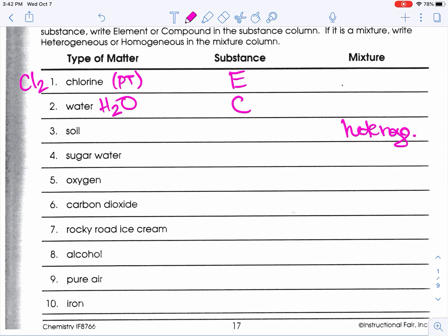Sugar water does not have a formula, so it would be a mixture. But the question is: would it be the same throughout, or would there be differences you can see? Sugar water should be the same throughout—it should be homogeneous.